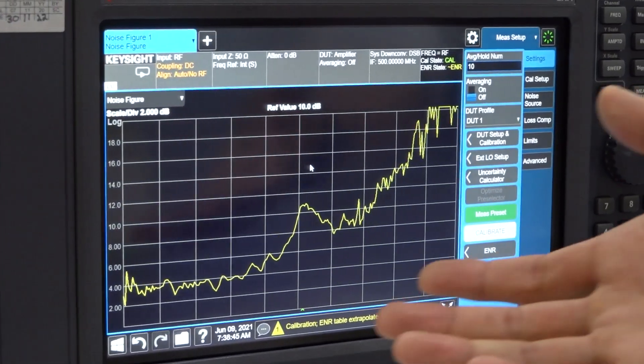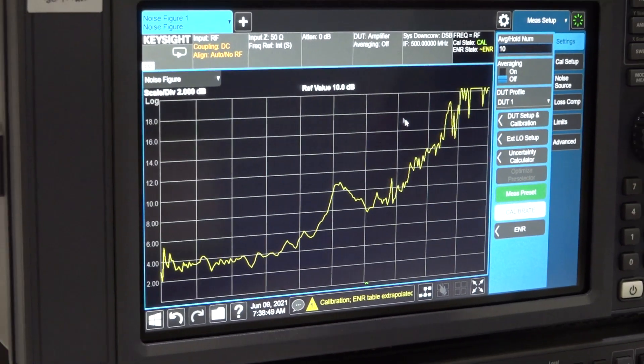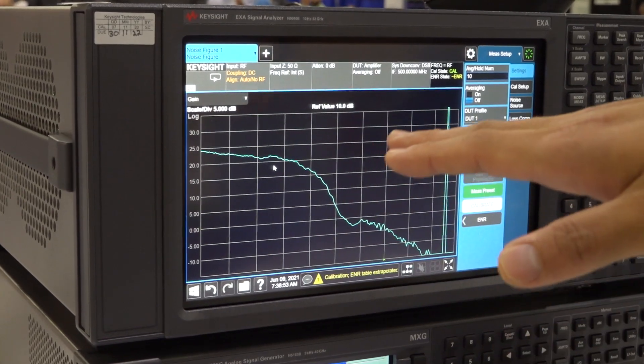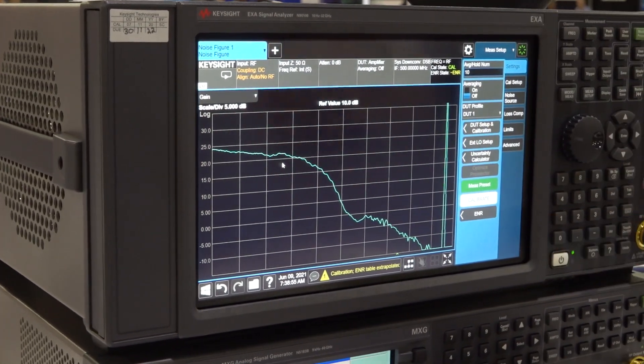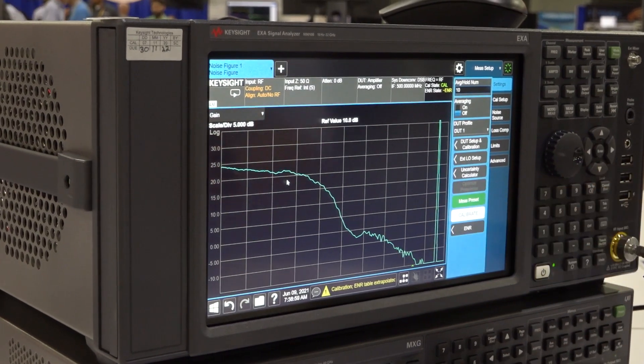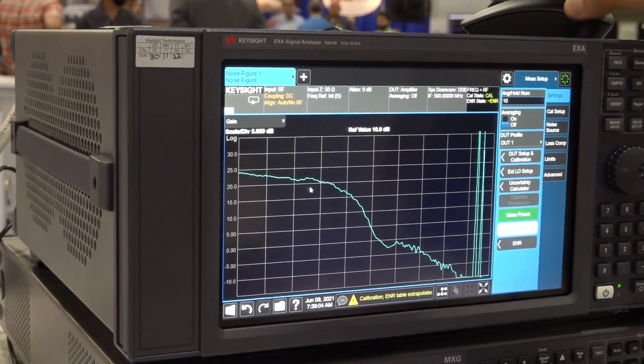Just to quickly show what the noise figure looks like, we're seeing roughly around 4 dB noise figure. On the gain, we see roughly about 20 dB before it starts to trail off. This is from 110 to 170, but the device under test is from up to 140, so that's why you see the gain trailing off towards the high end.